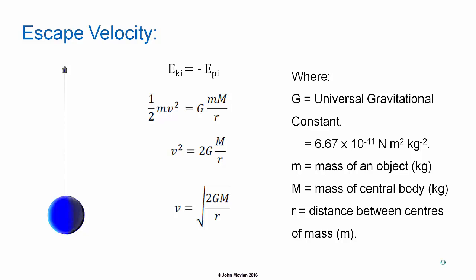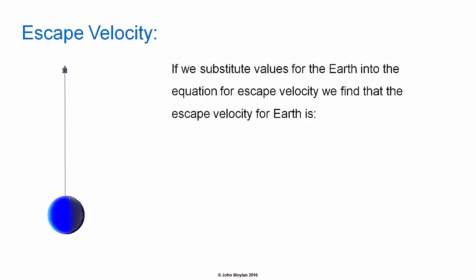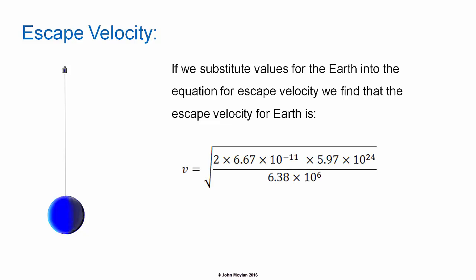The mass of the projectile has no effect on the value of the escape velocity. It depends simply on the mass of the planet or other body from whose gravitational field it is escaping, and R, its initial distance from the center of mass of that planet or other body in meters. If we substitute in the values for the Earth, we can calculate the escape velocity for the Earth.